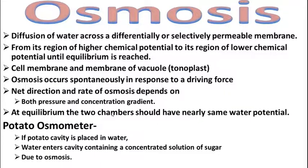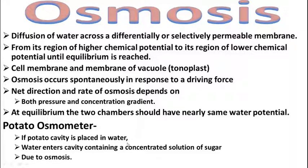Potato osmometer — यह क्या होता है? यह experiment lab के अंदर osmosis को समझने के लिए किया जाता है। इसके अंदर एक potato cavity तैयार की जाती है, आलू में से निकाली जाती है — कप जैसी structure। उसको water में रखा जाता है, और इस cavity के अंदर concentrated sugar solution डाला जाता है। कुछ time बाद cavity में sugar solution का level बड़ा हुआ मिलता है — यह osmosis की वज़ह से होता है।